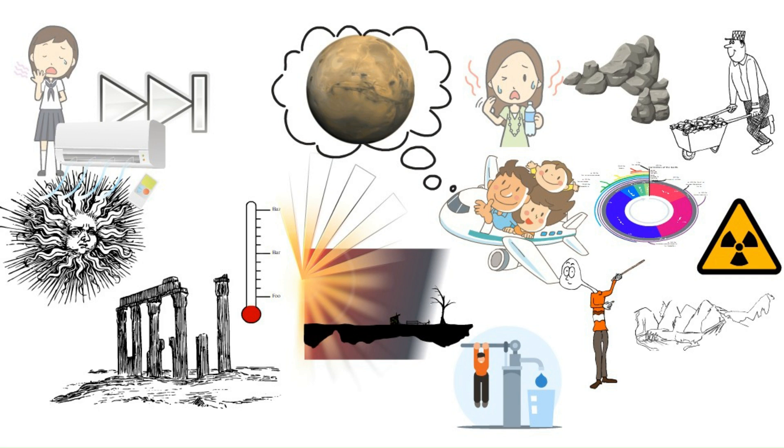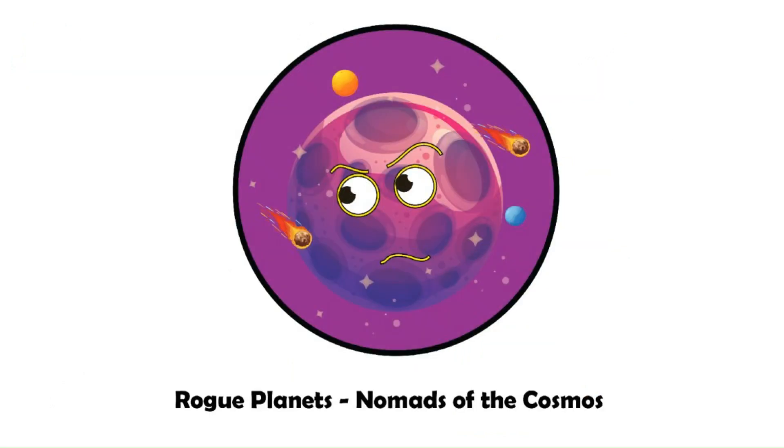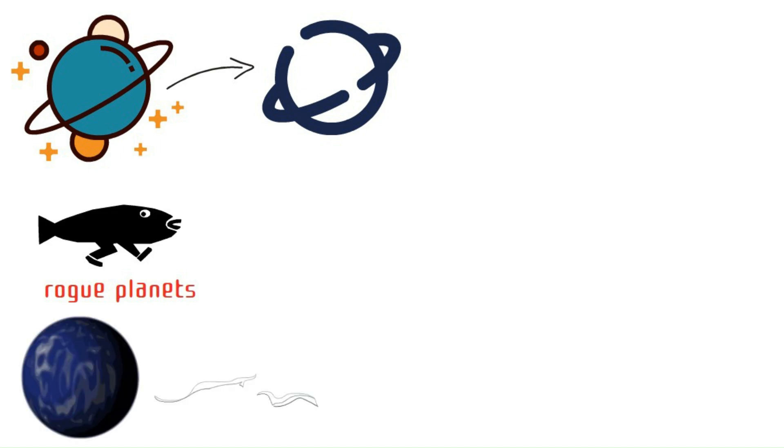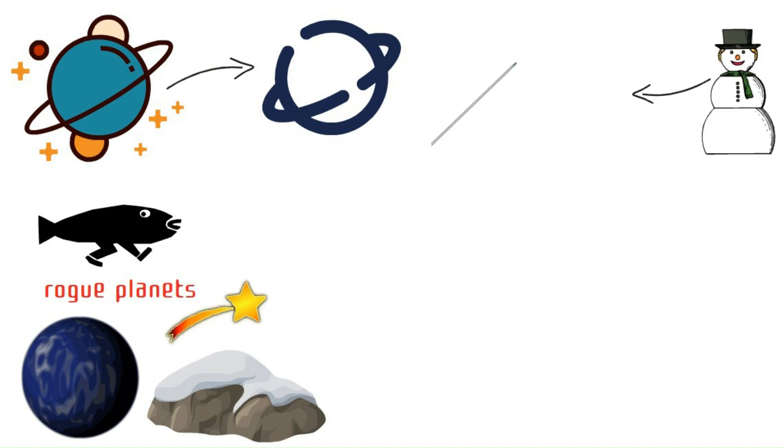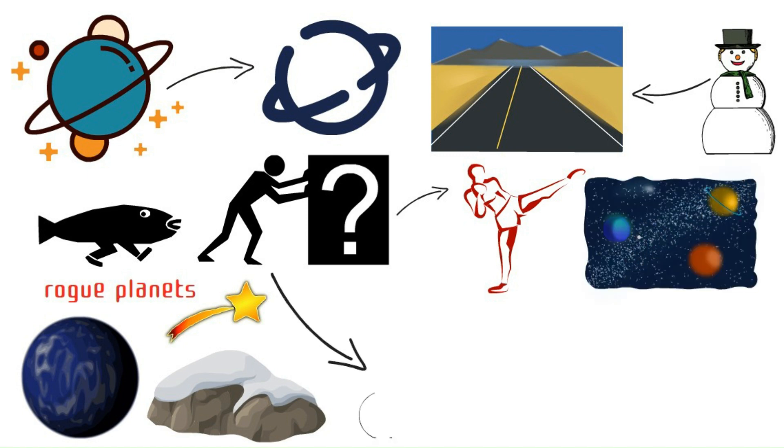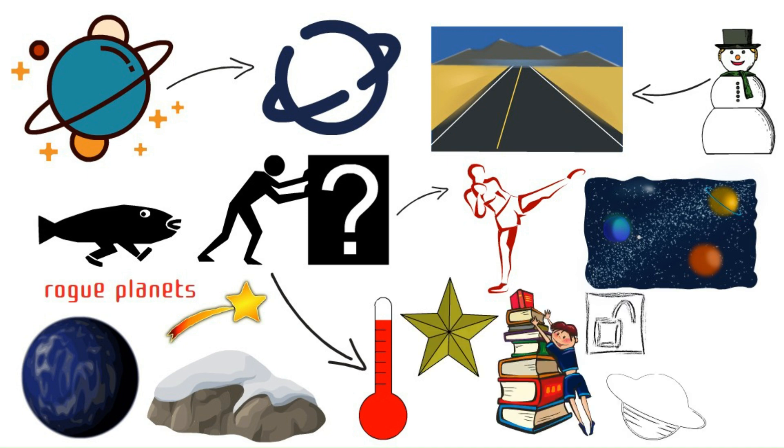Rogue planets. Nomads of the cosmos. Space can be a lonely place, and some planets reflect that to become the lonely hearts of the cosmos. Meet rogue planets, cosmic nomads with wanderlust. These giant balls of rock and ice drift through the darkness unattached to any star. Imagine a giant snowball on a never-ending road trip. How'd they get there? One theory, they were kicked out of their star systems during giant space brawls. Another idea, they never got hot enough to become stars in the first place. Studying these rogue planets could unlock secrets about how planets form and the crazy dynamics of star systems.